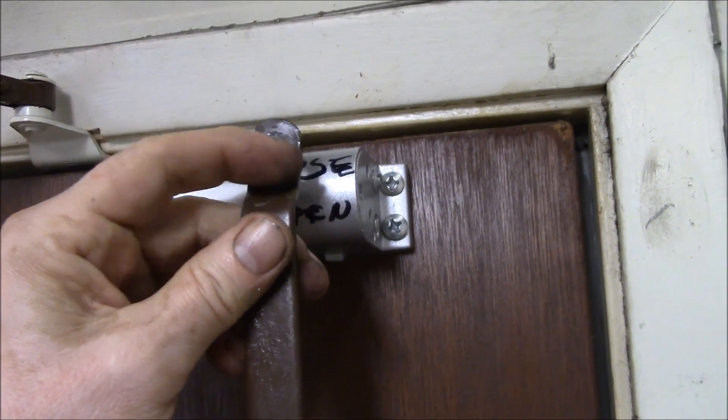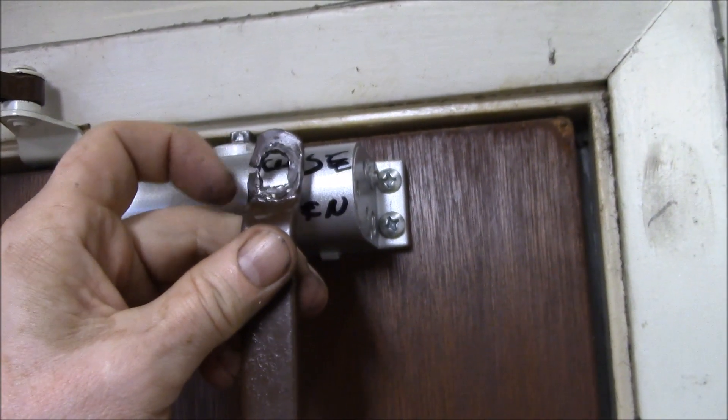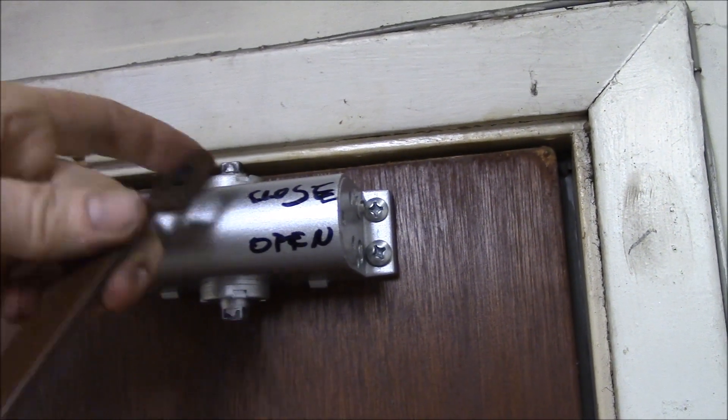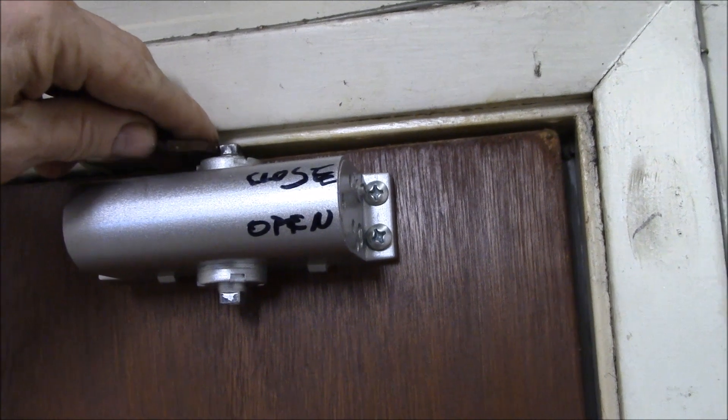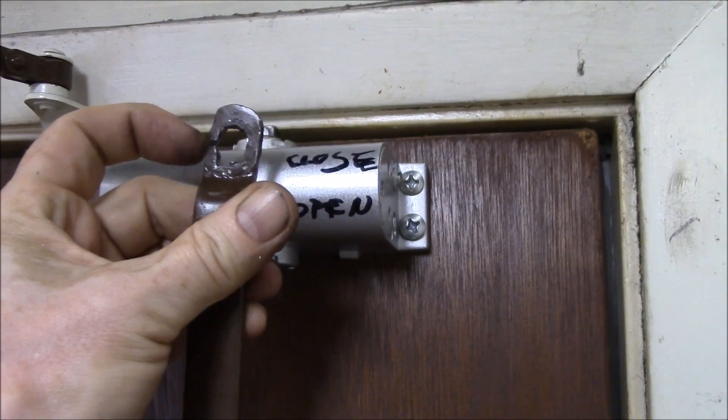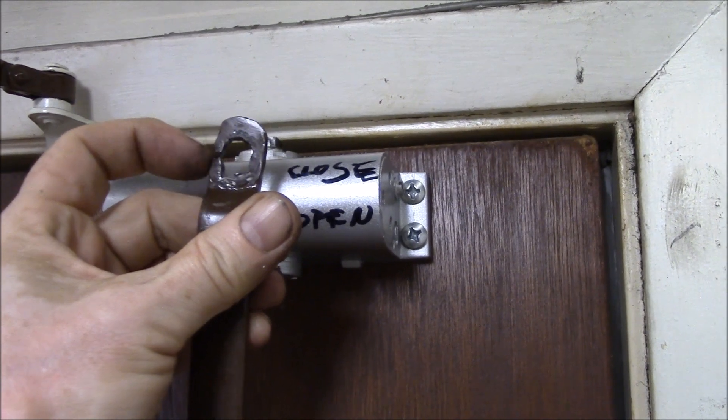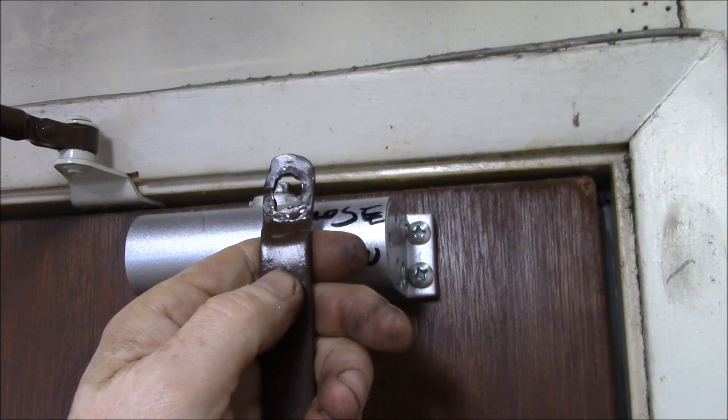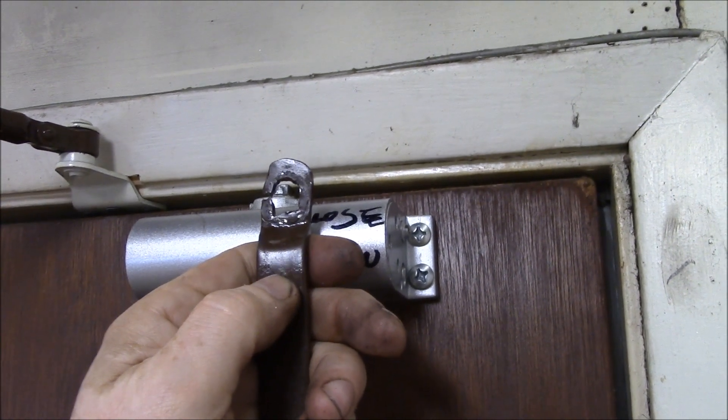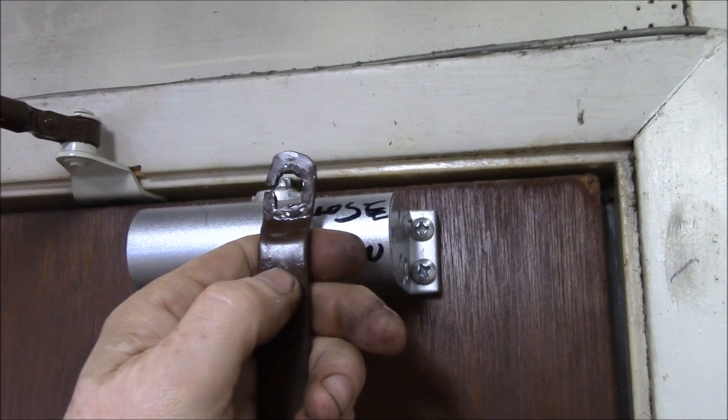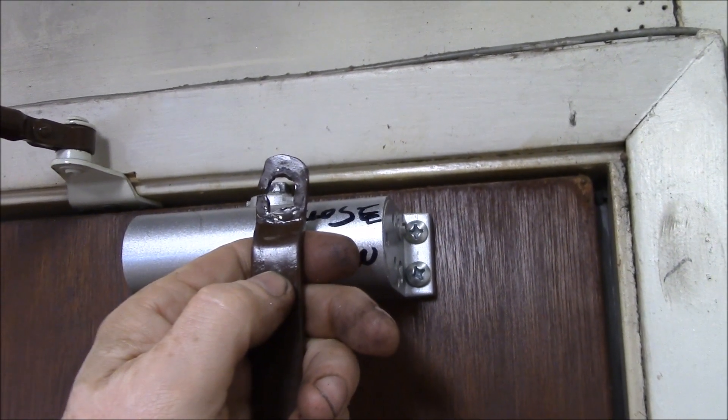What I might do is run a weld bead around the hole again to thicken it up, and then I'll grind it back to the thickness of that square stud that sticks up there. I may have thinned this out a little bit when I ground the previous welding out. Let's clean this up, I'll grind off all the paint, get down to some clean metal, and then see if we can bend this back together.